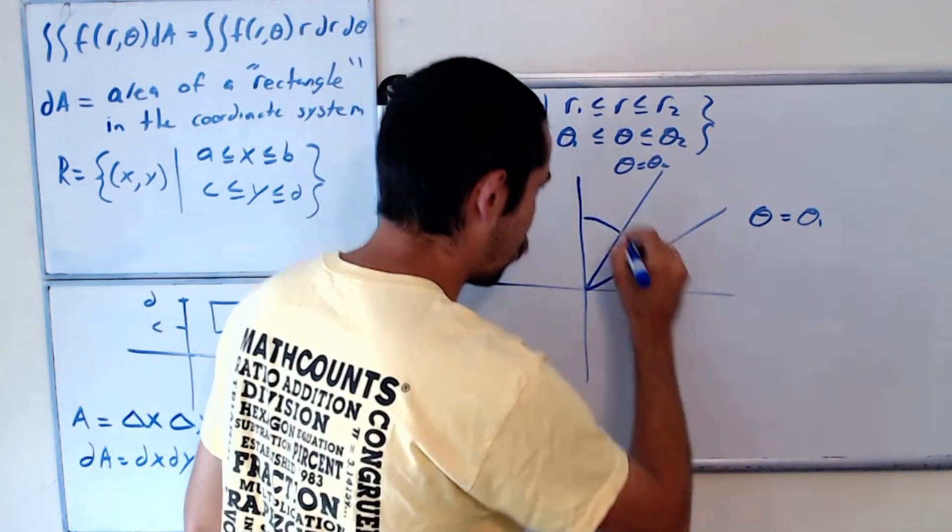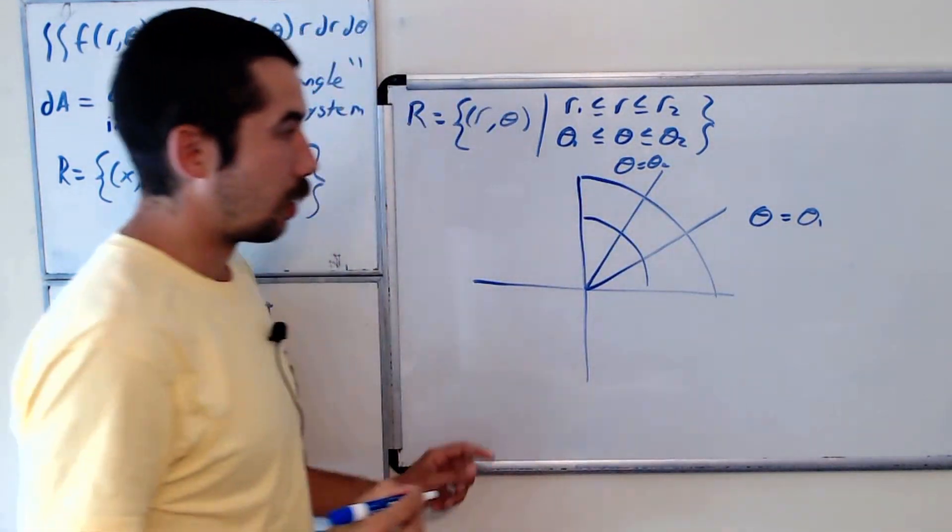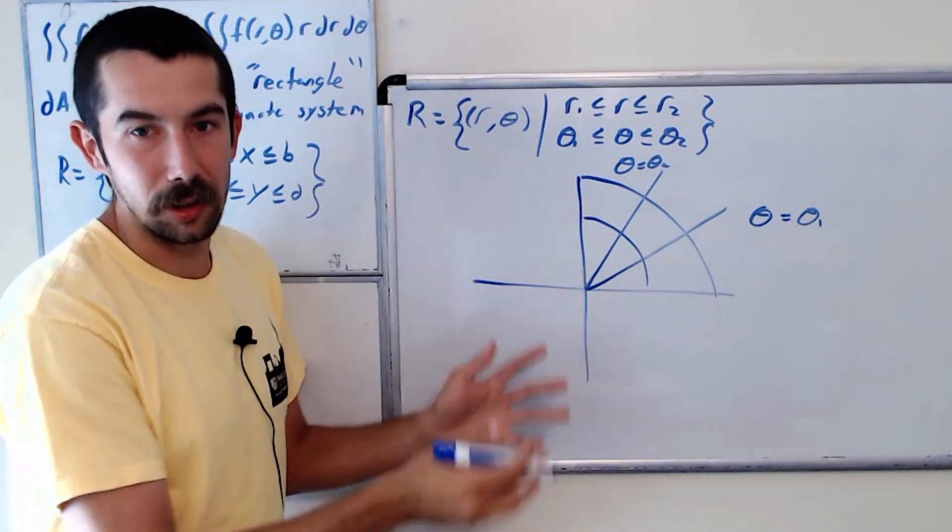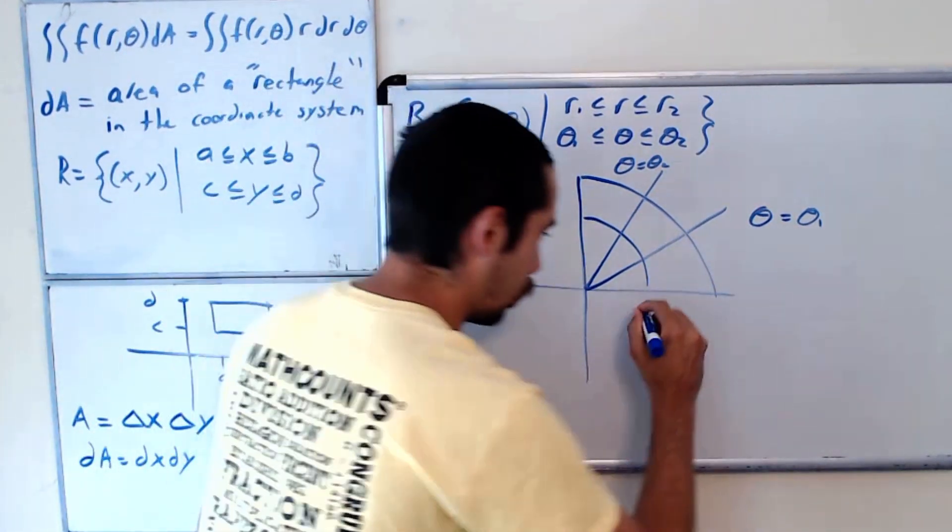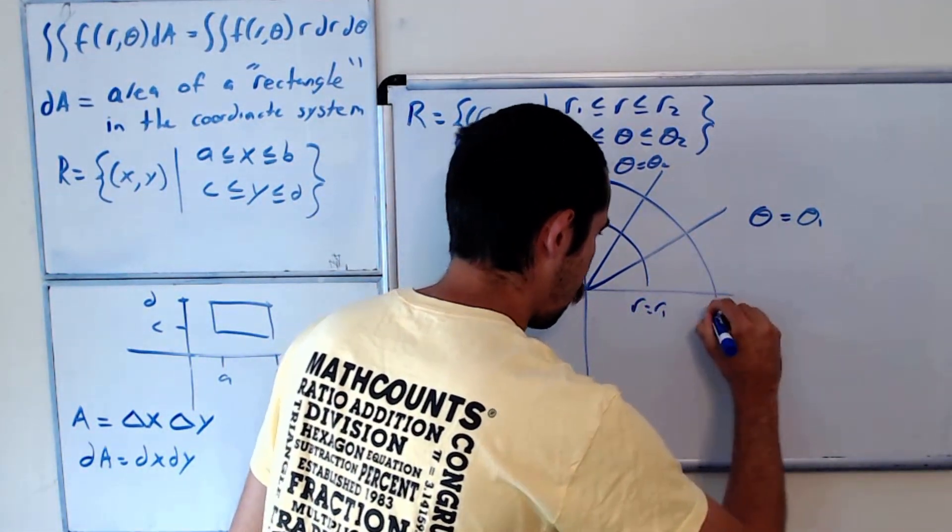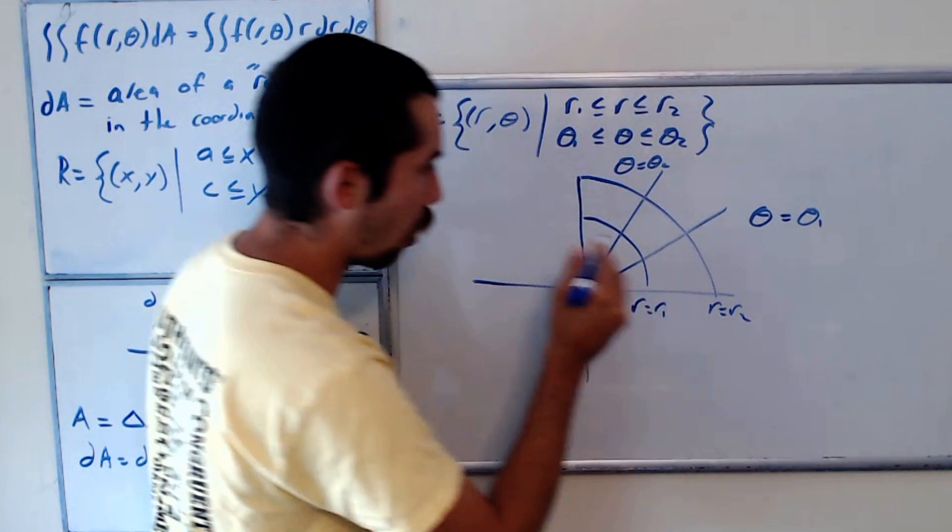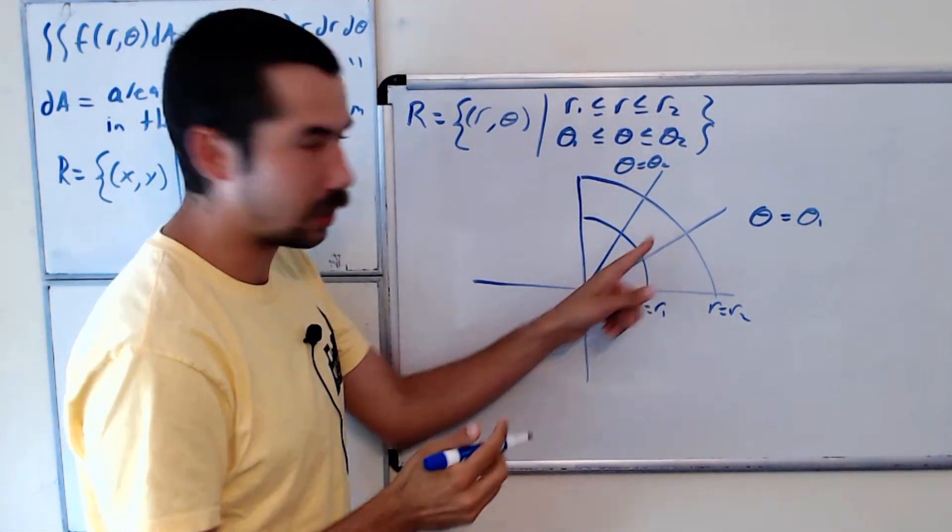I'll just do this quarter circle because we're only going to care about the part between these two rays. And then similarly, r equals r2 would be a circle centered at the origin with radius r2. So this is r equals r1, r equals r2, and so our polar rectangle is this region here.